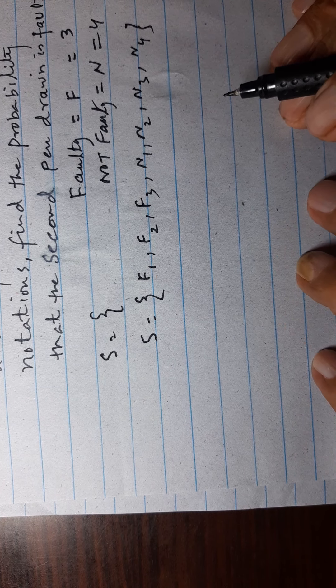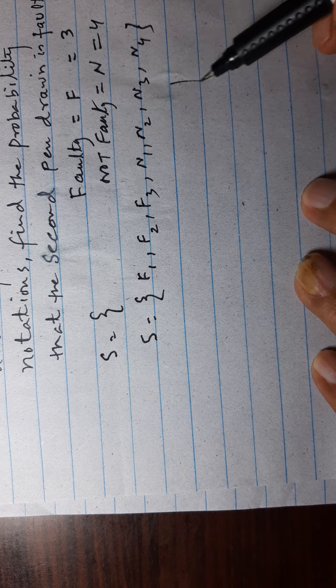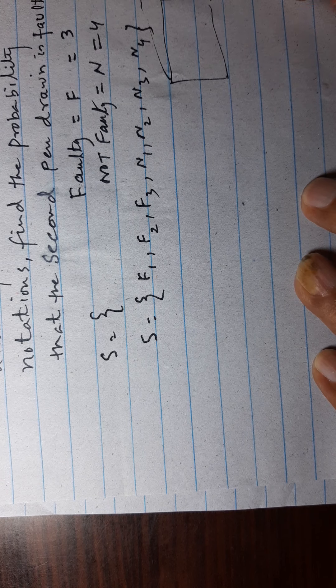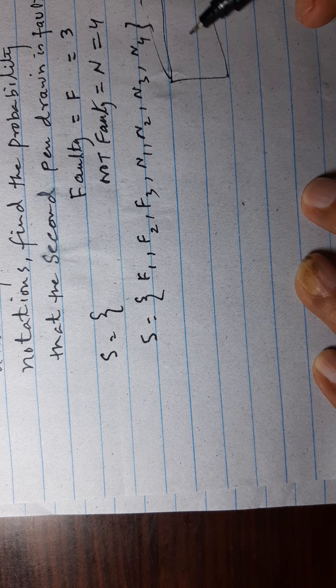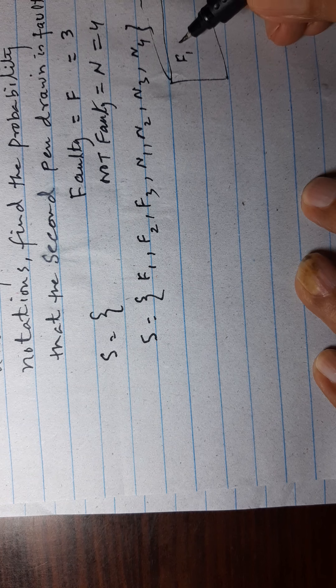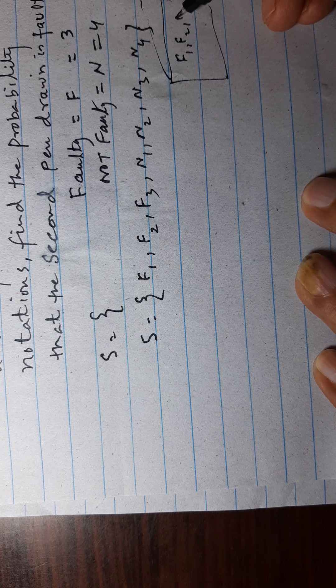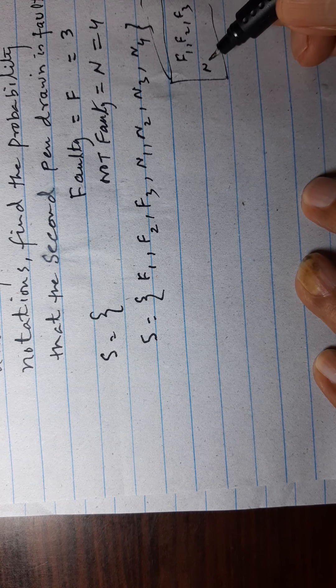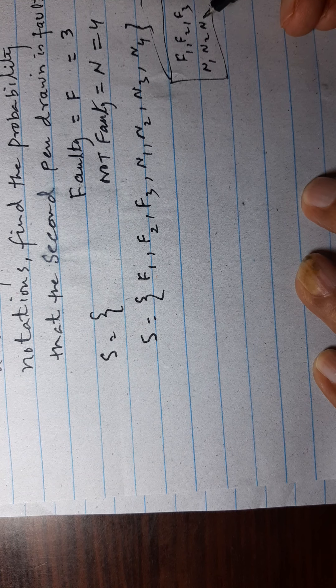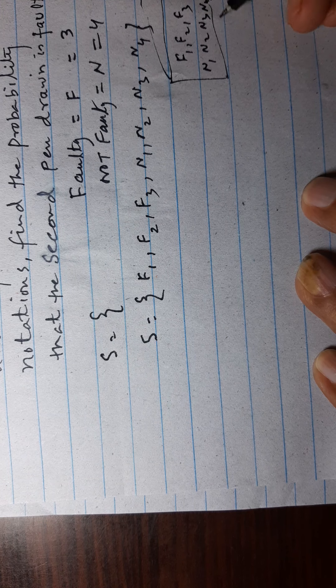Here this is the box, and we have F1, F2, F3, and N1, N2, N3, and N4.